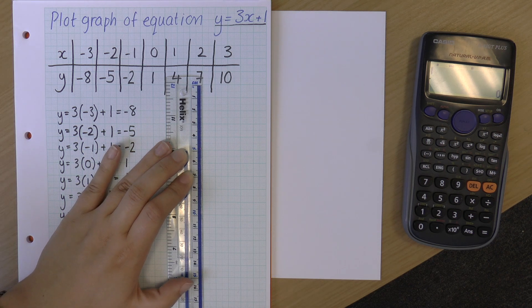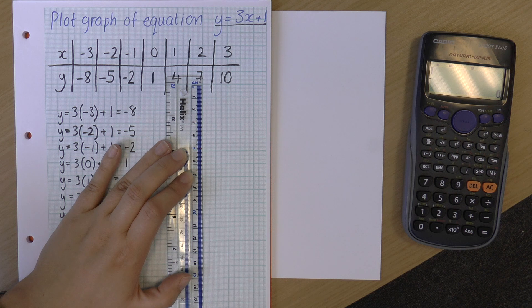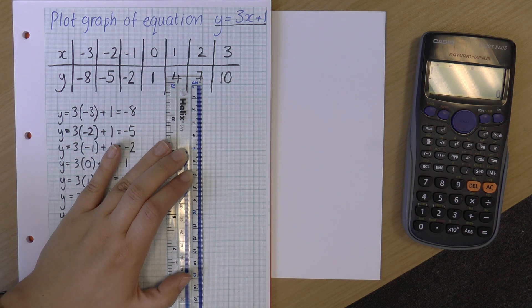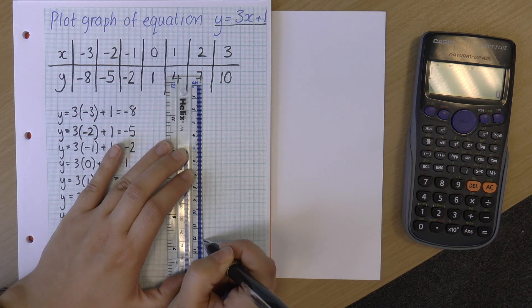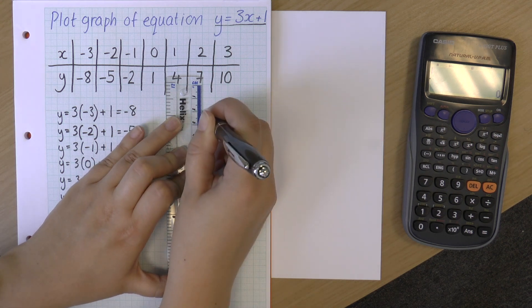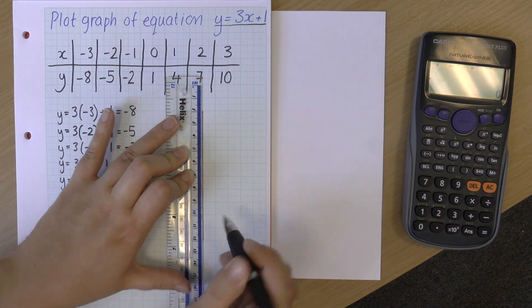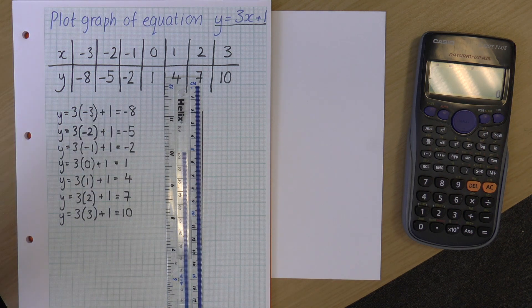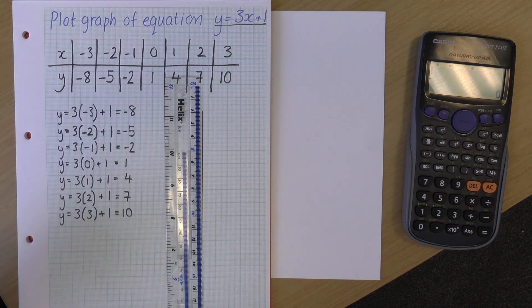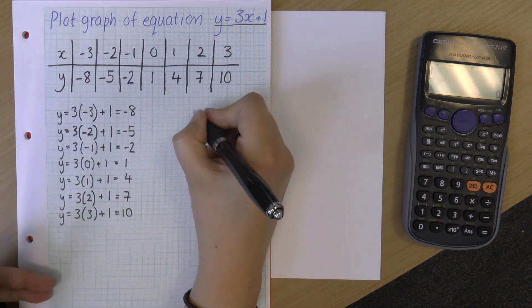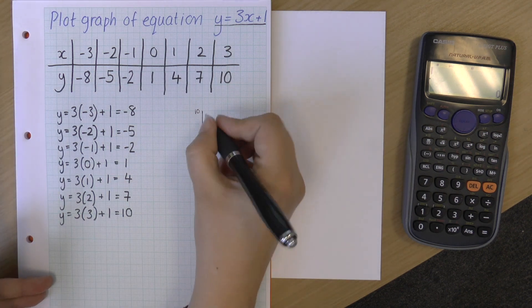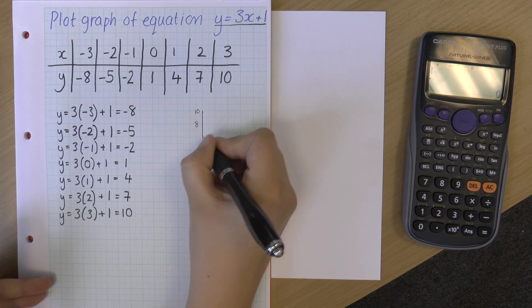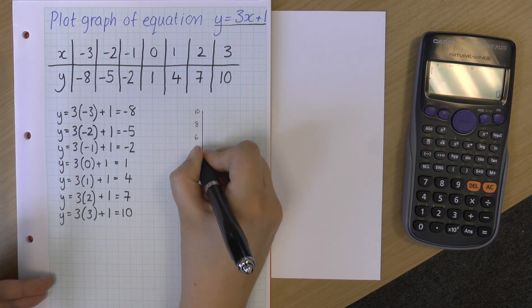And let's have a think about this scale. So if I'm going from 10 to minus 10, that's 20. So I probably want, I'm going to do 10 boxes where each box is worth 2 points, as it were. So I've got at the top 10, then 8, 6, 4, 2.